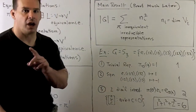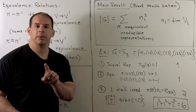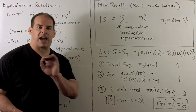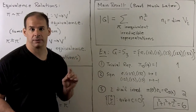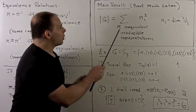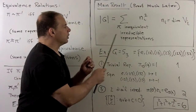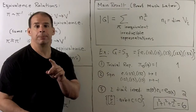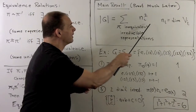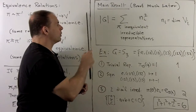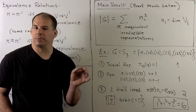Now, in general, we have the main result — we'll give the proof much later. For here, I want to give examples and show that the examples we give are exhaustive. Our result is: if we consider all inequivalent irreducible representations for our finite group G and take the sum of the squares of the dimensions, that equals the order of the group. Now let's run through some examples.